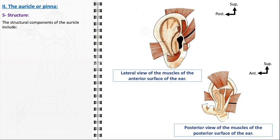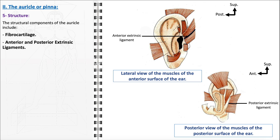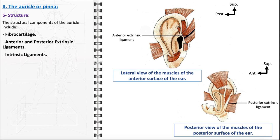The auricle is a composite structure comprising various elements, each contributing to its form and function. The primary structural component is fibrocartilage, which imparts both flexibility and strength to the auricle, providing a firm yet pliable framework that maintains the ear's shape while allowing for some movement. Surrounding the fibrocartilage are extrinsic ligaments, both anterior and posterior, which anchor the auricle to the skull, ensuring its proper positioning and alignment. Intrinsic ligaments are also present within the auricle, maintaining the integrity of the cartilaginous structure and ensuring the ear retains its complex shape.